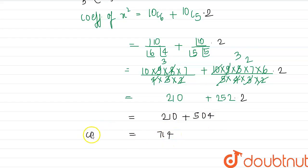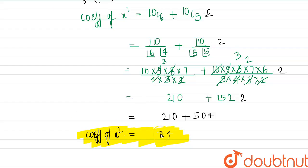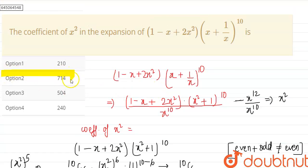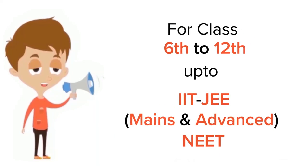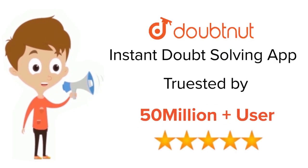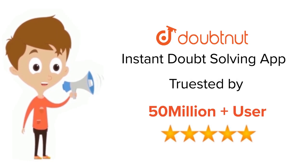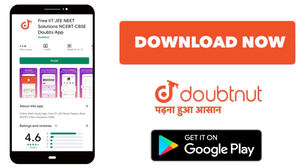So the coefficient of x² is 714. This is the required answer. Checking our options, option 2, which is 714, is the correct answer. Thank you. For Class 6 to 12, IIT-JEE and NEET level — trusted by more than 5 crore students. Download DoubtNet app today.